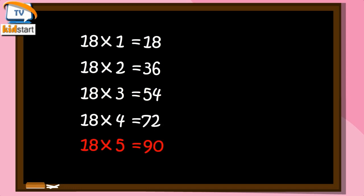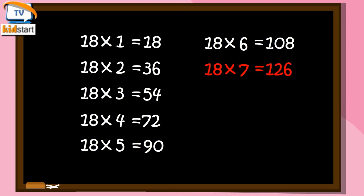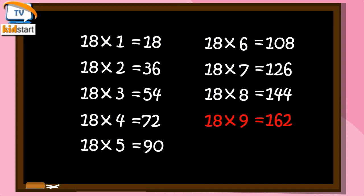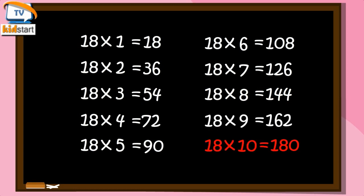Eighteen Fives are 90. Eighteen Sixes are 108. Eighteen Sevens are 126. Eighteen Eights are 144. Eighteen Nines are 162. Eighteen Tens are 180.